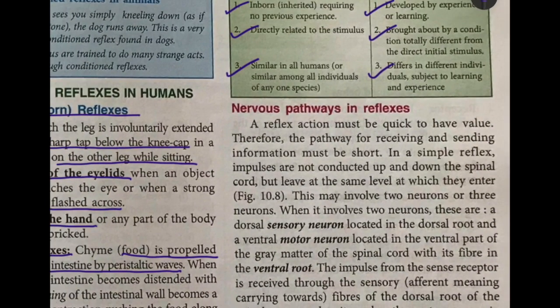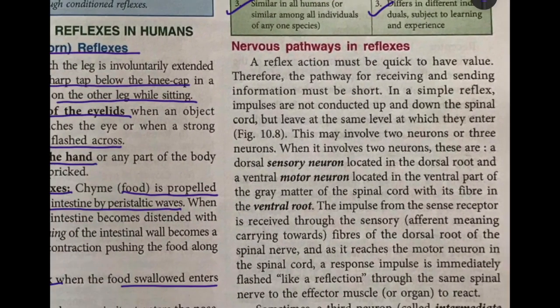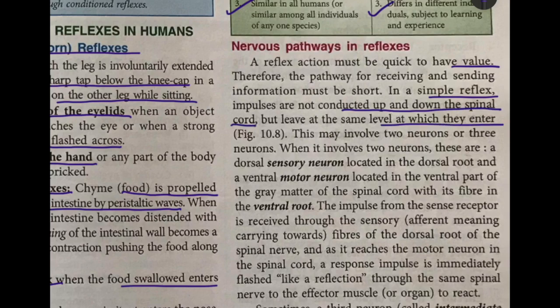Next we move on to the nervous pathways in reflexes. A reflex action must be very quick to have value, so the pathway for receiving and sending information must be very short — there is no time for the stimulus to travel all the way up to the brain. In a simple reflex, impulses are not conducted up to the brain but leave at the same level at which they enter, involving either two neurons or three neurons.